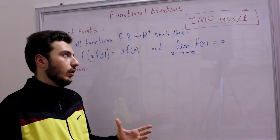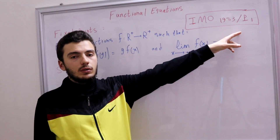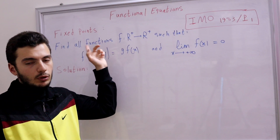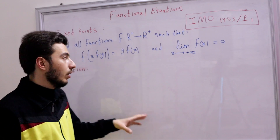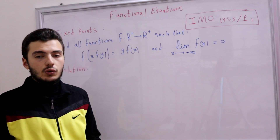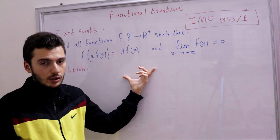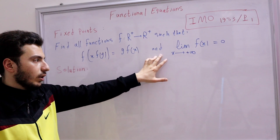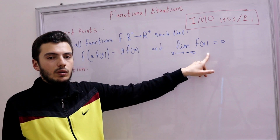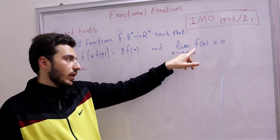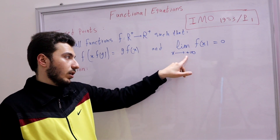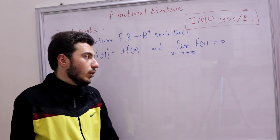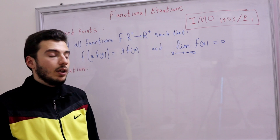Our problem for this video is from IMO 1983, Problem 1 — an IMO problem that uses the fixed points principle. We're asked to find all functions f from positive reals to positive reals, where 0 is not included, satisfying two conditions. First: f(x·f(y)) = y·f(x). Second: the limit of f(x) as x approaches positive infinity equals 0.